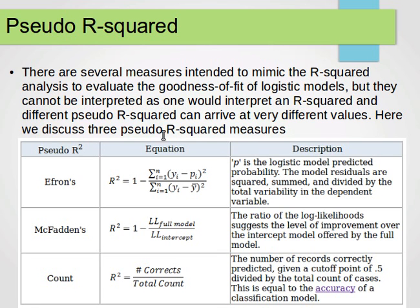Here we have three pseudo R-squared measures. The first one is Efron's method or Efron's formula R-squared equals one minus the sum of squares, as you can see, over this one here. So yi minus pi, yi is the predicted value, whereas pi is the logistic model predicted probability. So the model residuals are squared, summed and divided by the total variability in the dependent variable. So here is yi is the dependent variable minus pi, the probability there, squared, over yi minus y-bar. Y-bar is the average or the mean of the predicted values of y. One minus that value, as you can see. That's one way of computing R-squared.